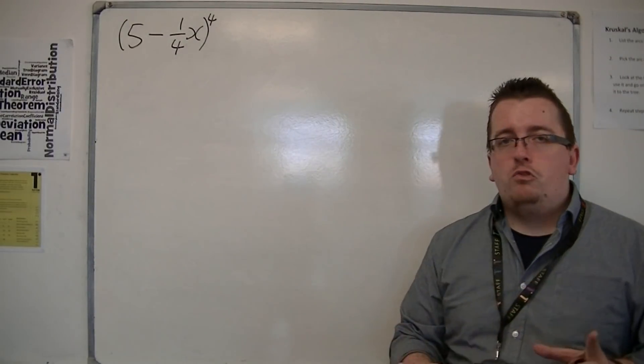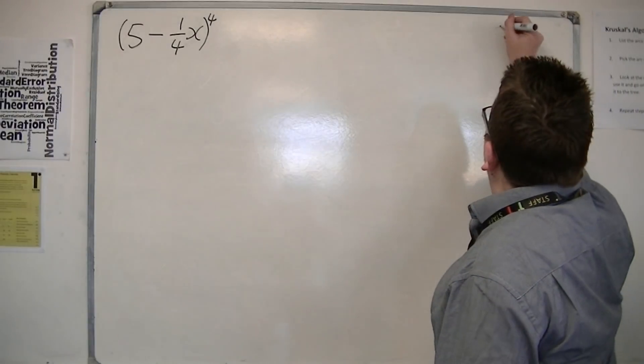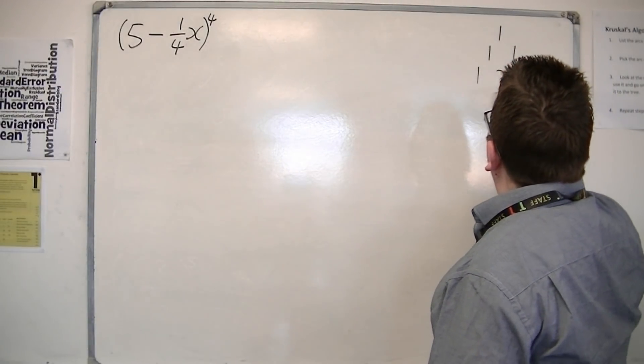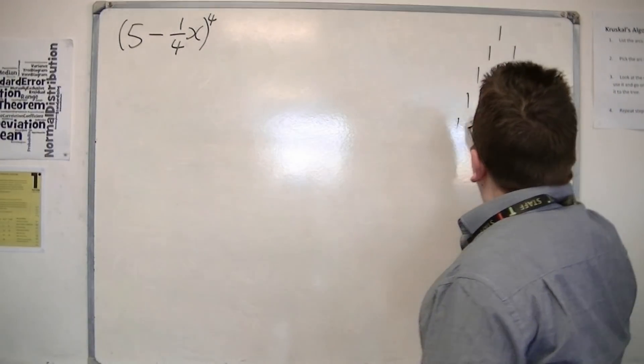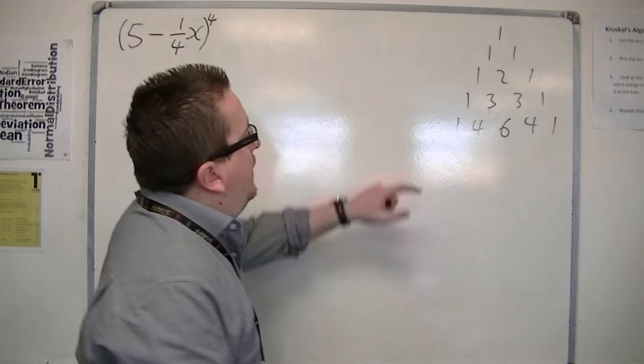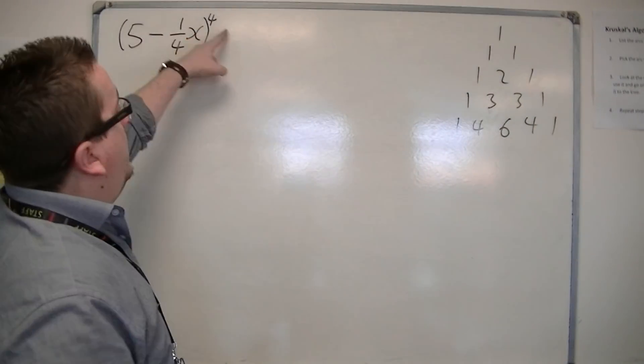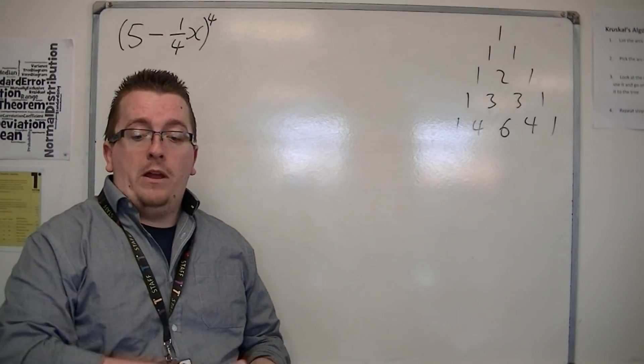So I'm going to quickly draw out Pascal's triangle. 1, 1, 1, 1, 2, 1, 1, 3, 3, 1, 1, 4, 6, 4, 1. And this is the row that I want because I am expanding something with a power of 4 in it.